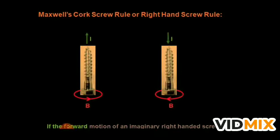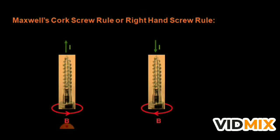Next is Maxwell's Cork Screw Rule. If you see this diagram, there are two screws. In the first case, the screw is moving forward — the forward direction represents the direction of current, and the direction in which the screw rotates is the direction of the magnetic field. In the second case, the screw is moving downward, meaning current is moving down. The direction of magnetic field is shown by the red arrow and the direction of current by the green arrow.